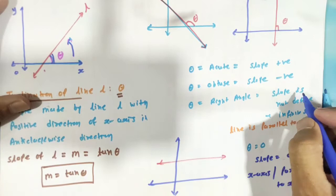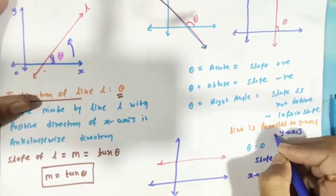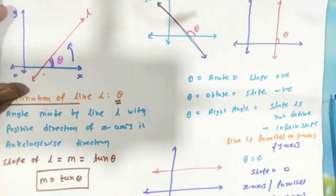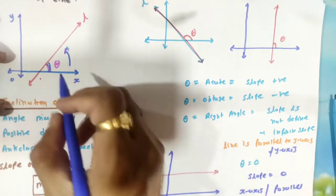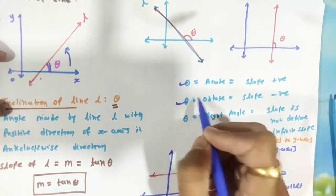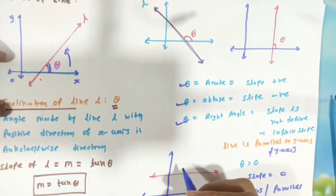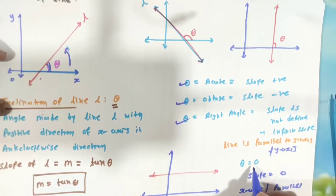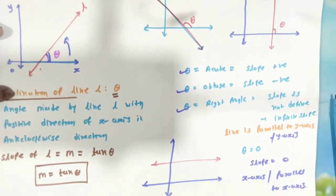If it is parallel to the y-axis, then it will be the y-axis. So to summarize the slope: acute angle — slope is positive; obtuse angle — slope is negative; right angle (90°) — slope is infinite or not defined; parallel to the x-axis — inclination is 0, so slope of the line is 0.